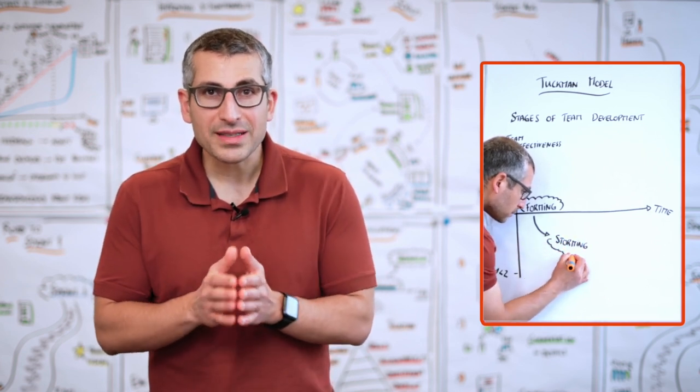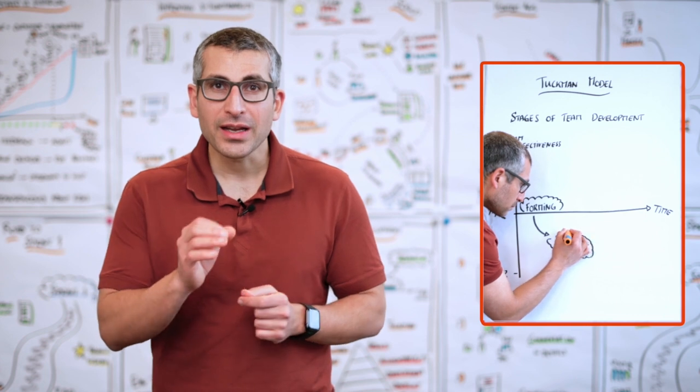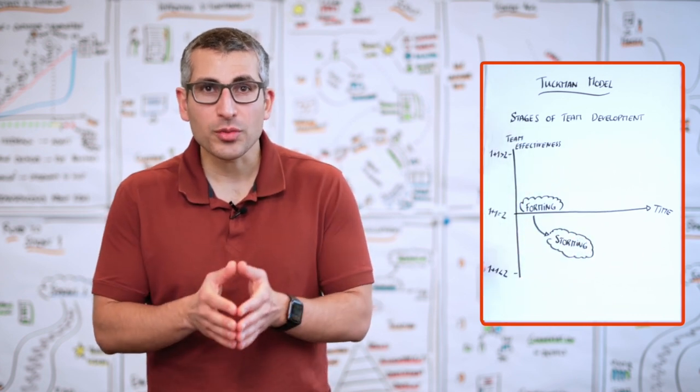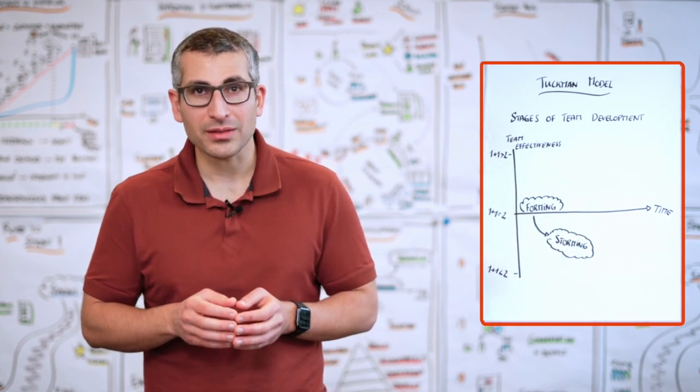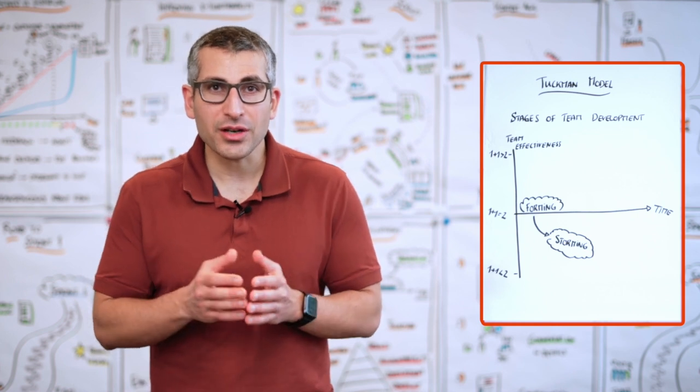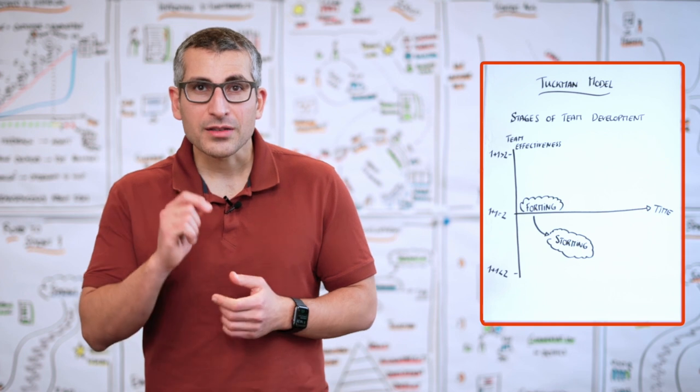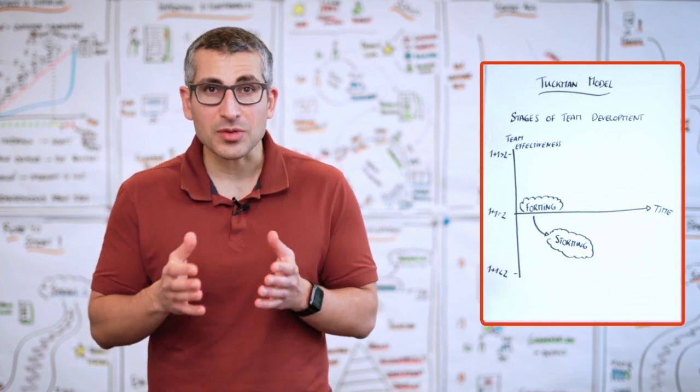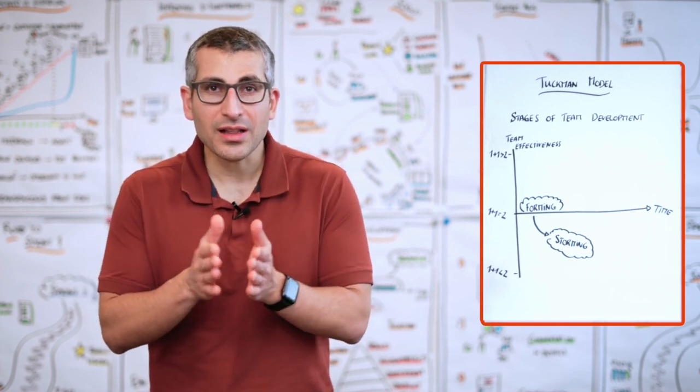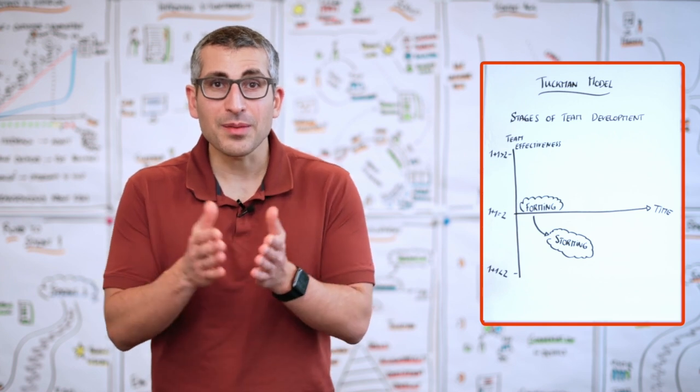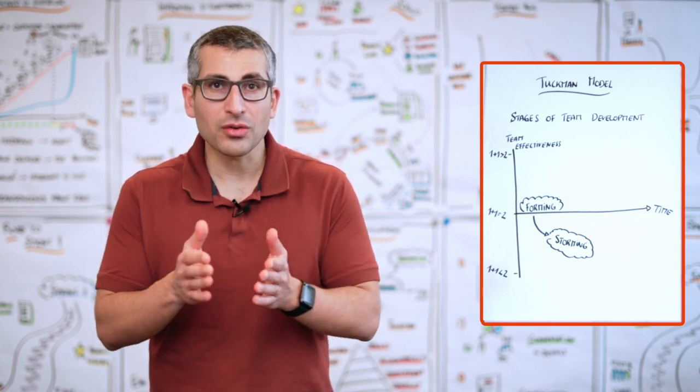In the storming phase, a team does not share a shared understanding in terms of how they're going to collaborate. They don't have a shared understanding in terms of who is responsible for what. So many questions that teams need to address are still unclear, and based on that, they go into the storming phase.